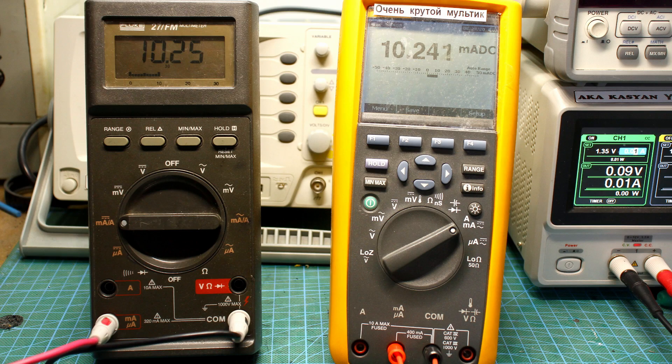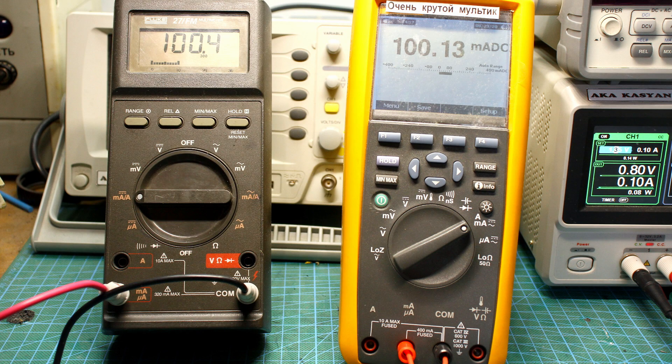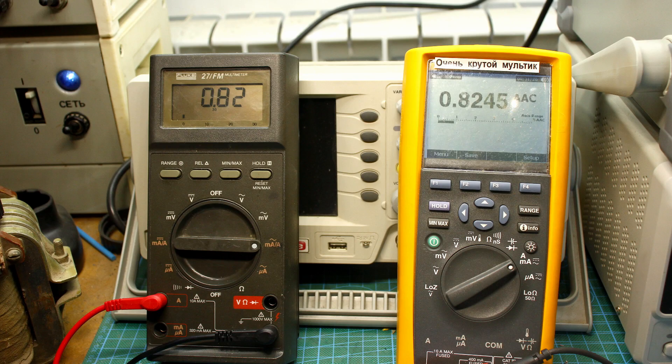Direct current 10 milliamps, 100 milliamps, 1 ampere. Alternating current.